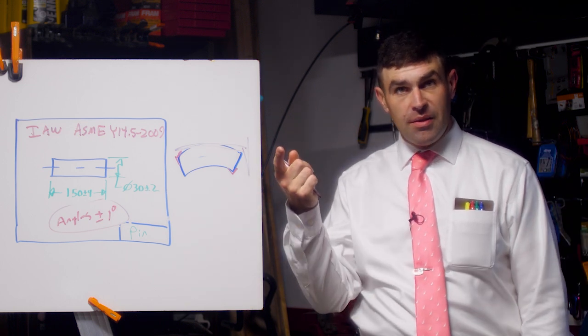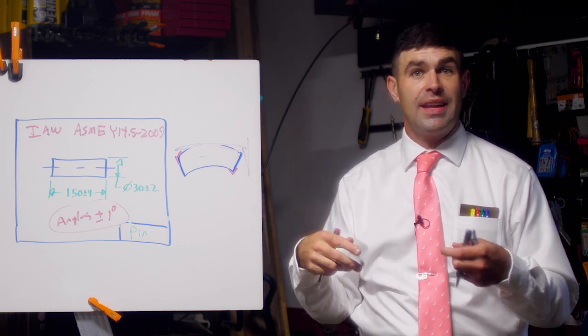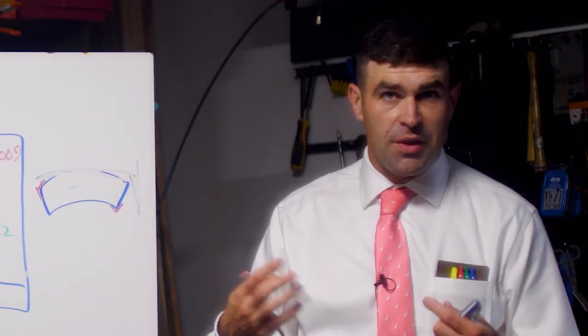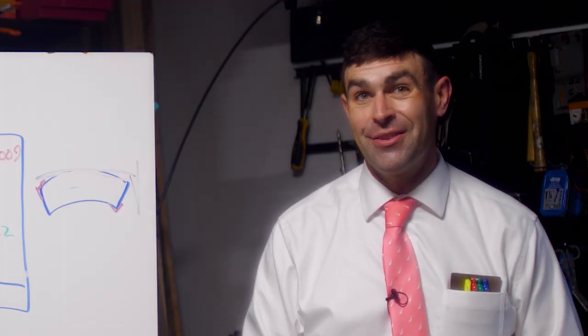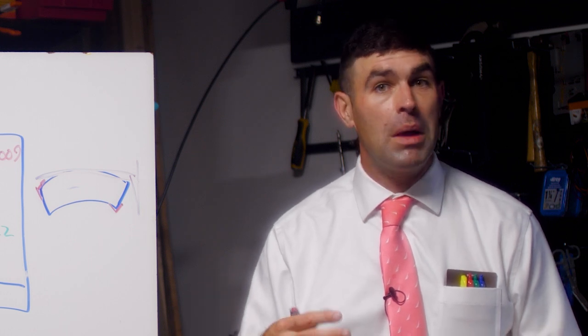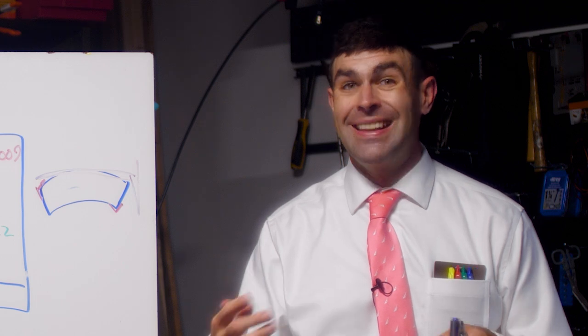So the way we invoke Y14.5 to avoid this situation is somewhere in the drawing, normally near the title block, but it could be in the notes, is to say, hey, we're in accordance with or interpret this in accordance with or whatever wording you want to use. ASME Y14.5 and the year you're using.